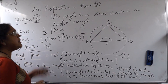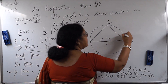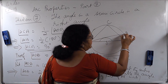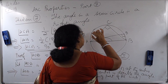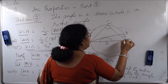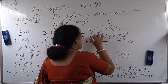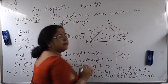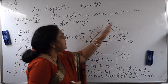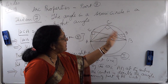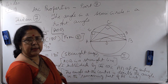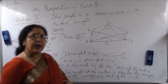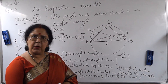Now, this point C can be anywhere — it can be here also. Suppose there is a point D, even that will be 90 degrees. If a point E is here, this also will be 90 degrees. So any point on the circumference of the circle — if you take any angle in the semicircle, it will be 90 degrees, that is the right angle. It is very often used and very important. I hope it is clear to you children.